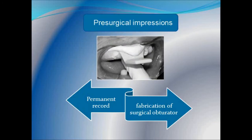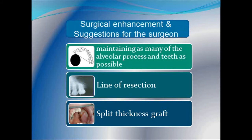Next is the pre-surgical impressions. The cast obtained from impressions of the maxilla and mandible can be used as a permanent record of the pre-surgical state and can also be used for fabrication of the surgical obturator. Two casts should be made — one kept as a permanent record and the other used for making the surgical or interim obturator. Finally, surgical enhancement and suggestions for the surgeon: the prosthodontist should inform the surgeon of the prosthodontic advantages of maintaining as many of the alveolar process and teeth as possible. During surgery the line of resection should pass through the socket of extracted teeth rather than cutting between the roots of teeth adjacent to the defect, as those teeth are critical abutments for the obturator prosthesis.